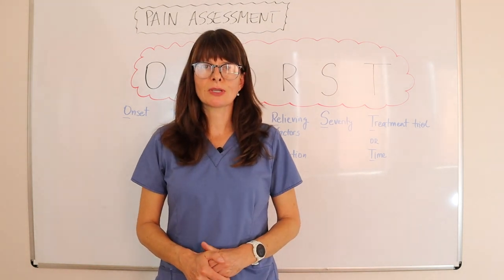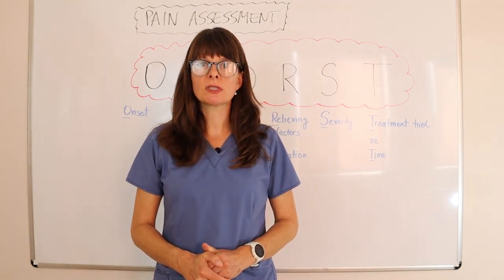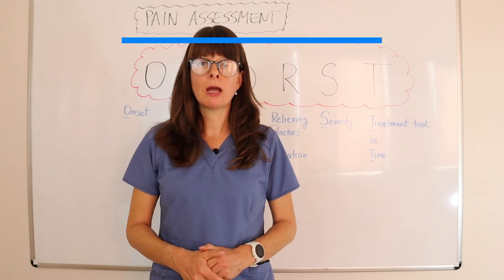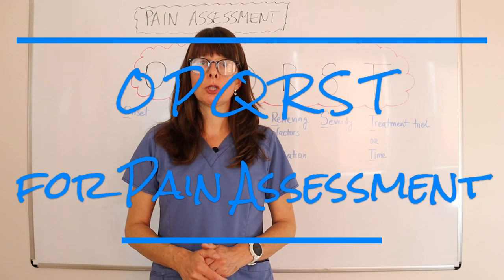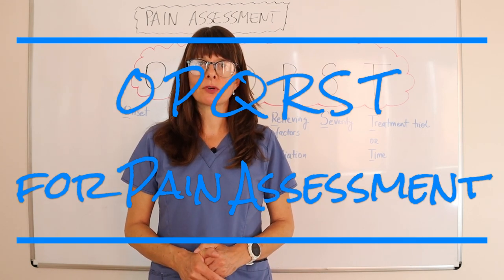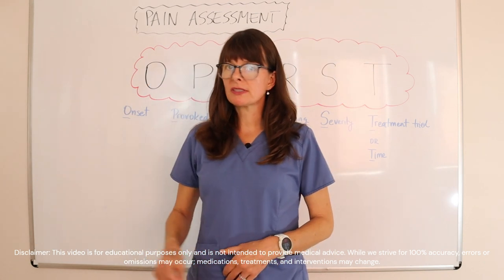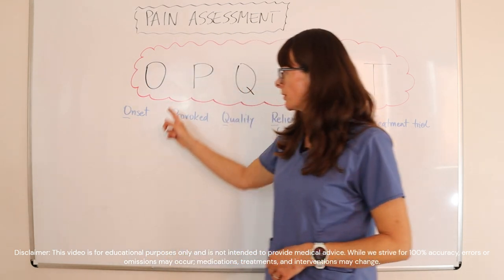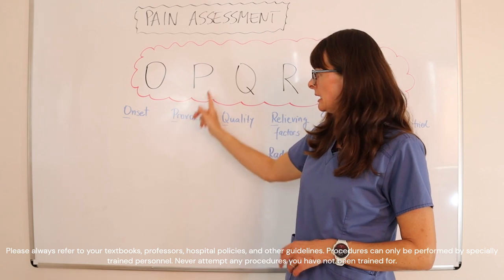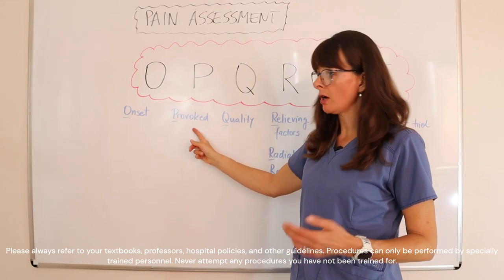Welcome to Nursing School Explained and this video on using the pain assessment tool or acronym OPQRST for assessing a patient's pain. O stands for onset — when did the pain start — and P stands for provoked, meaning what caused it.